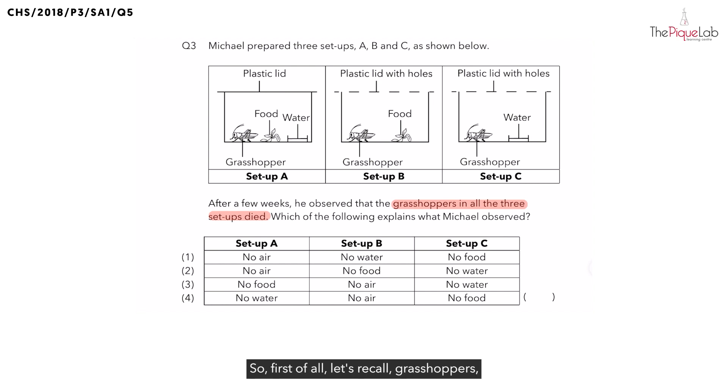So, first of all, let's recall, grasshoppers, are they living or non-living things? We know grasshoppers are insects, they must be living things. Now, remember, what do all living things need in order to survive? They need to have air, what else? Food and water.